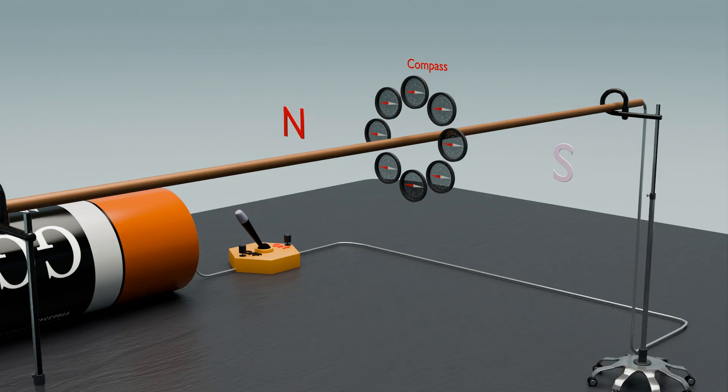When we place compasses around a current-carrying conductor, we observe a fascinating behavior. Each compass needle aligns itself with the magnetic field created by the electric current flowing through the conductor.